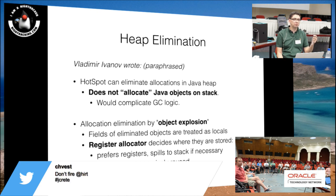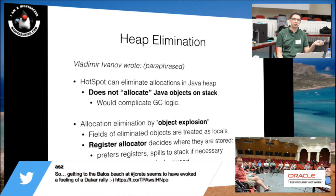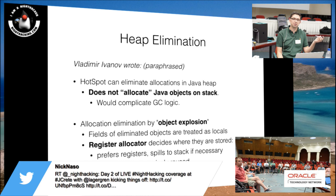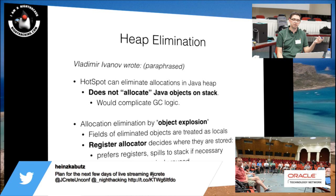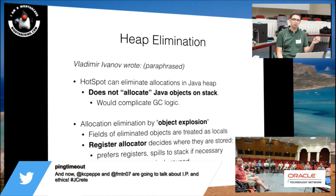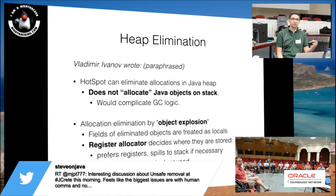From a discussion on the Hotspot compiler dev mailing list, Vladimir Ivanov explained that when Hotspot eliminates heap allocations, it doesn't allocate them onto the stack in the traditional sense. What it does is 'explode' the object into its fields. Those fields are treated as local variables and passed to the register allocator, which decides whether it can fit these exploded fields into CPU registers. If there are too many, it can spill them onto the stack.